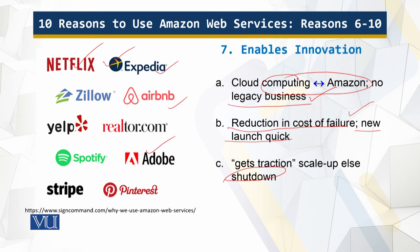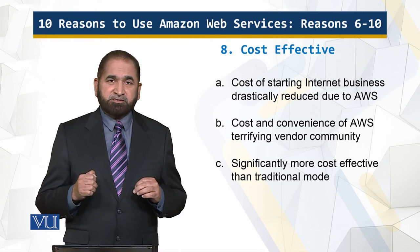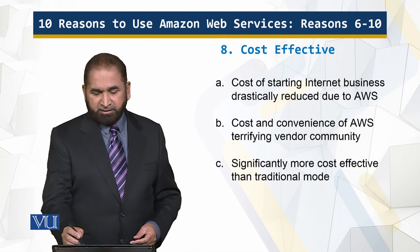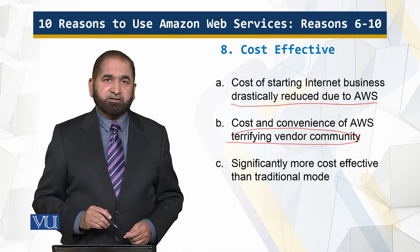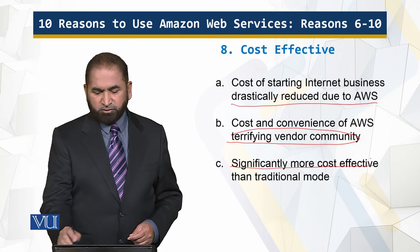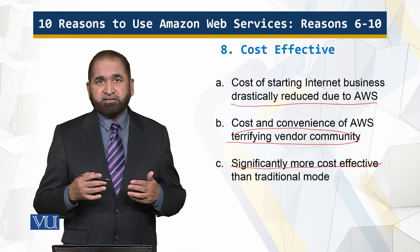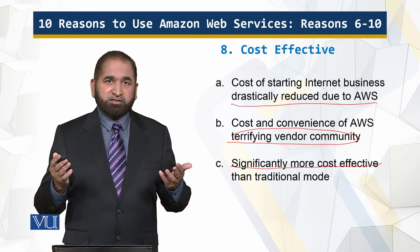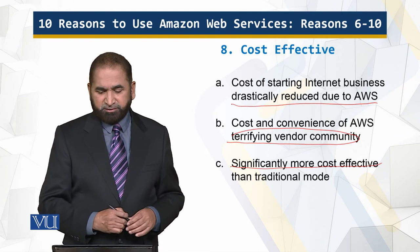Cost effectiveness: the cost of starting an internet business has reduced tremendously. Studies from Silicon Valley show that the cost of starting a business has reduced because there is no upfront investment, giving more affordability and a drastic reduction in cost due to Amazon Web Services. It is significantly more cost effective than the traditional mode because as the need for processing power and storage increases more can be added, and when the need is gone it can be removed — so there's no issue of what to do with expensive purchased hardware.